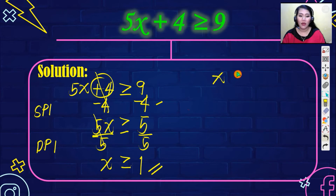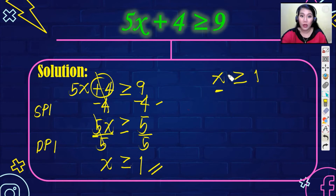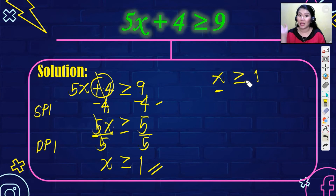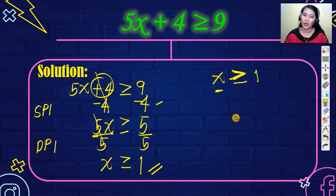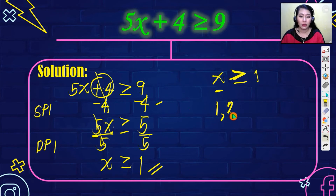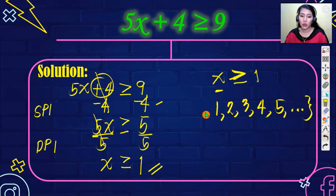So x is greater than or equal to 1 is our cue. The numbers equal to or greater than 1 — meaning 1 is the lowest. Going to the right: 1, 2, 3, 4, 5, and so on. Do not forget to close your set in a brace. That's your final answer for number 2.